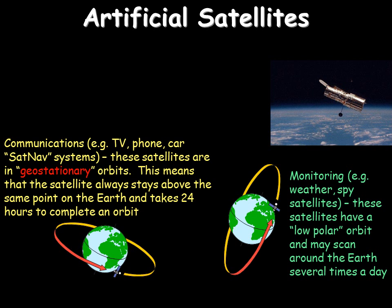Monitoring satellites move in a low polar orbit, so they can get closer and scan the Earth several times a day, beaming back messages for spying, weather satellites, and so on.